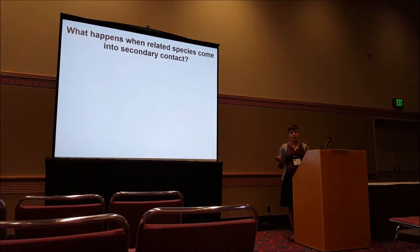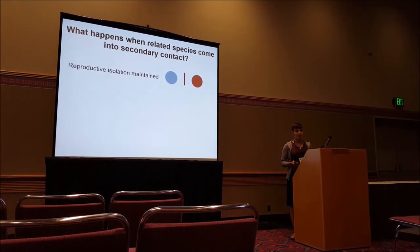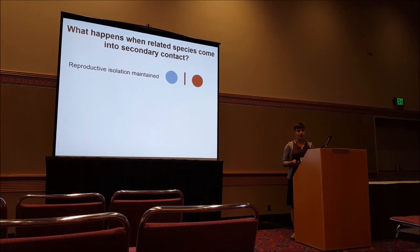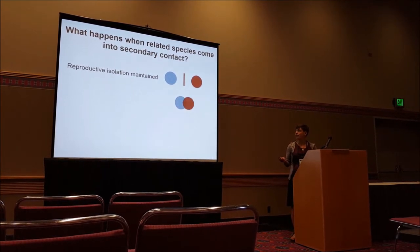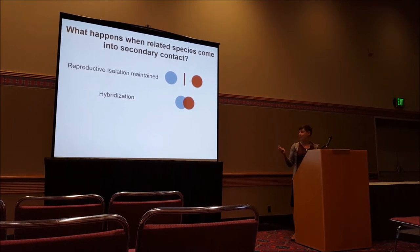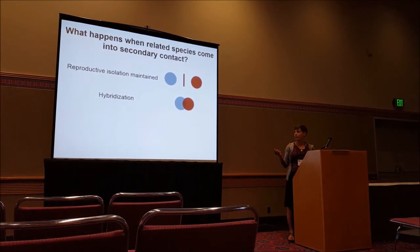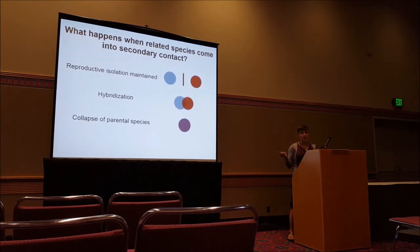When related species come into secondary contact, we know that there are a variety of outcomes we might expect. A first possibility is that if they've been evolving long enough in allopatry and have evolved full reproductive isolation, we could have a situation where close relatives come back together and reproductive isolation is entirely maintained. Since we're in a reproductive isolation and hybridization session, most of you are also well aware that it's quite possible that hybridization will occur, or perhaps that in some locations or throughout the species range, there could be collapse of parental species.